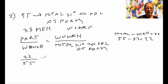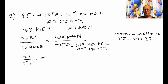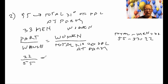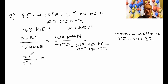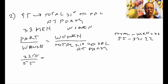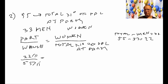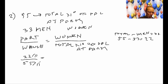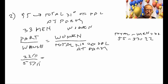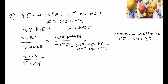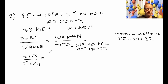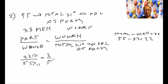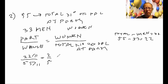So twenty-two out of fifty-five are women, but we want to simplify that fraction. We divide twenty-two by eleven and fifty-five by eleven. Eleven goes into twenty-two two times, and eleven goes into fifty-five five times. So two-fifths of the party are women.